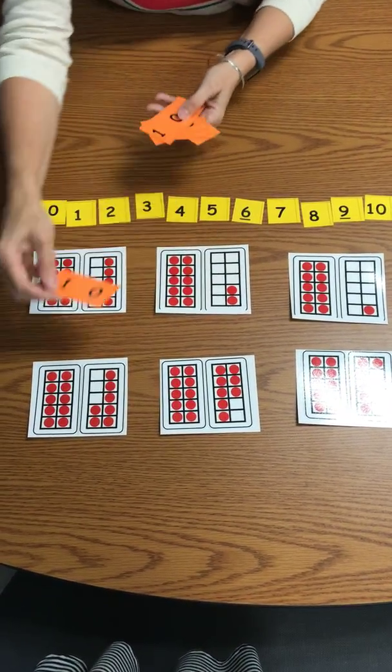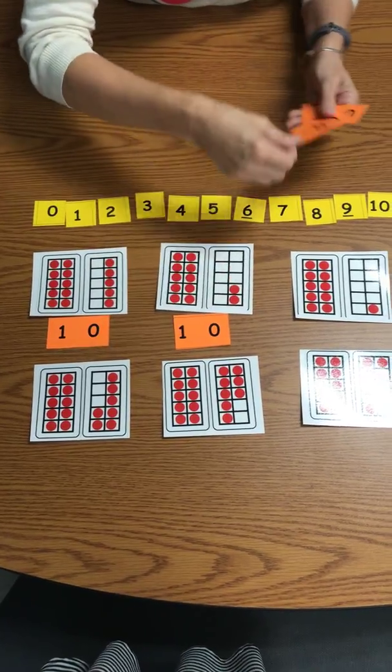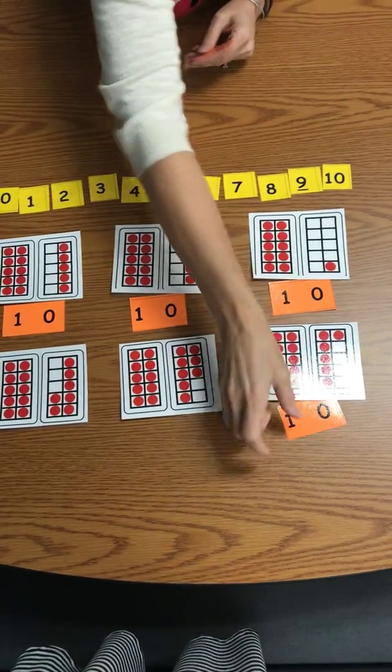Now you have your orange cards. I told you you had a lot of stuff. Do you see how the tens are on this side? Make sure your tens are over on this side.